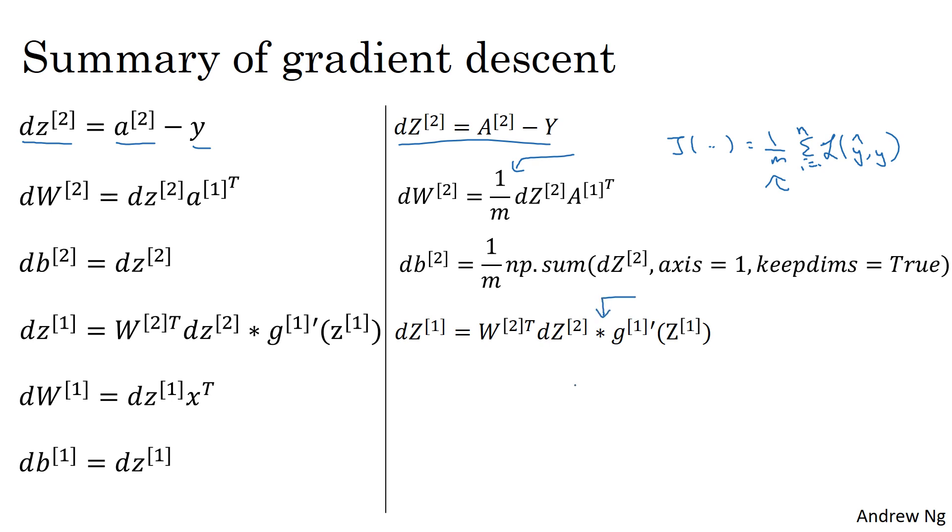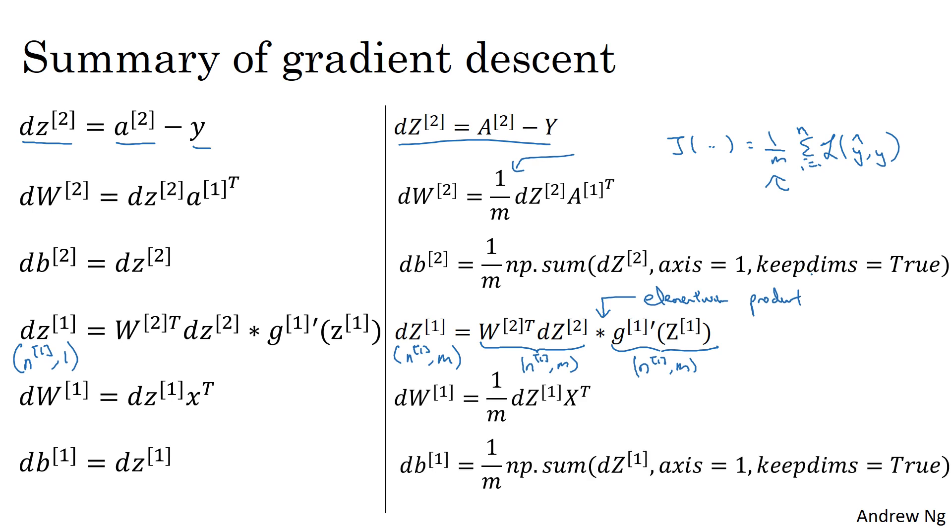Only whereas previously this was, we saw on the previous slide, an n1 by one dimensional vector, now this is an n1 by m dimensional matrix. And both of these are also n1 by m dimensional, and so that's why that asterisk is an element-wise product. And then finally, the remaining two updates perhaps shouldn't look too surprising.